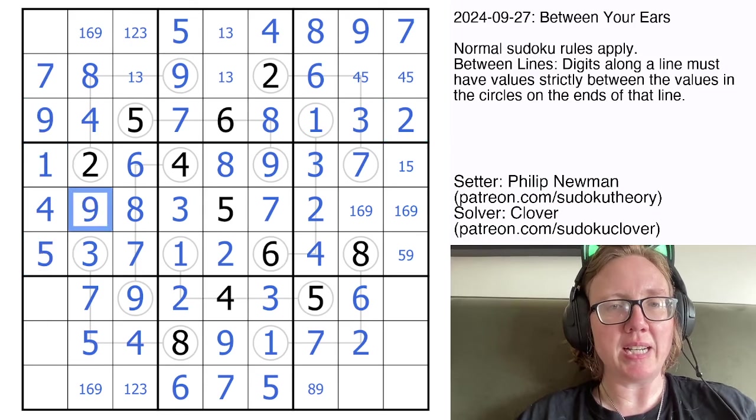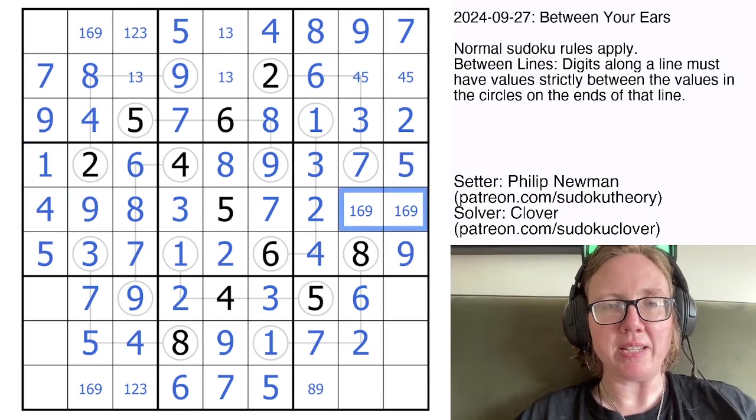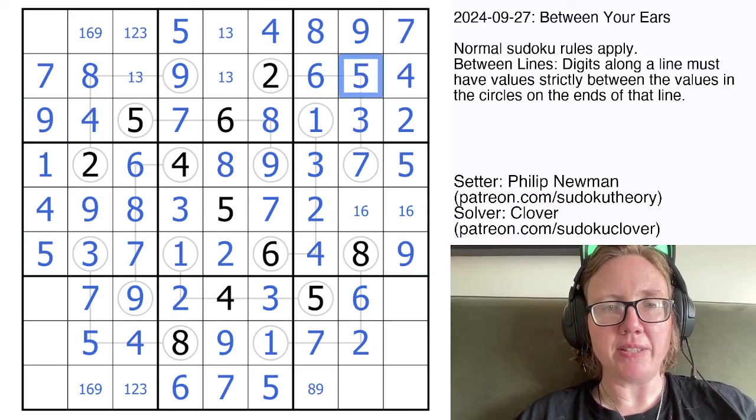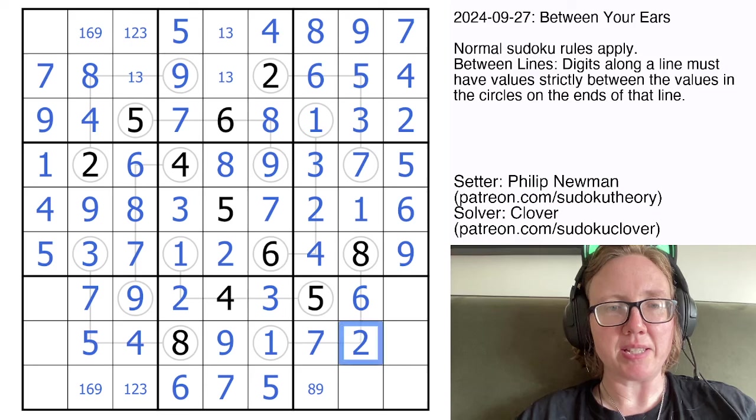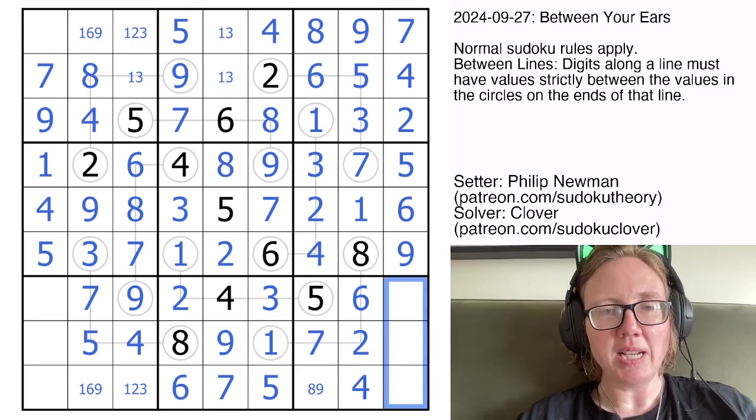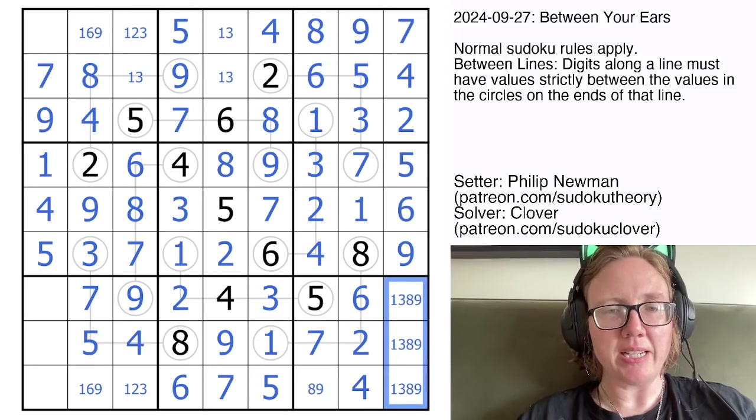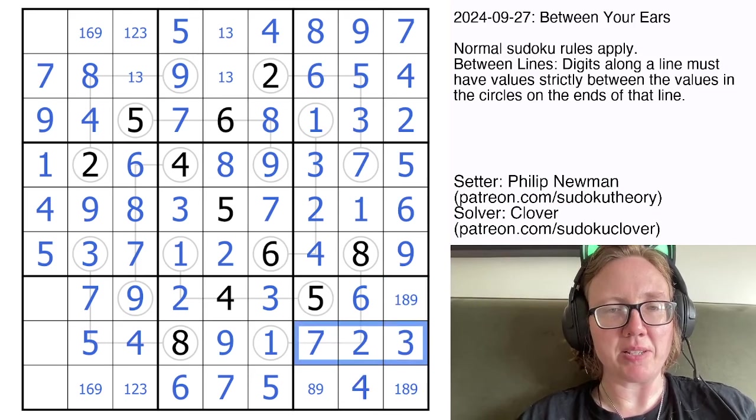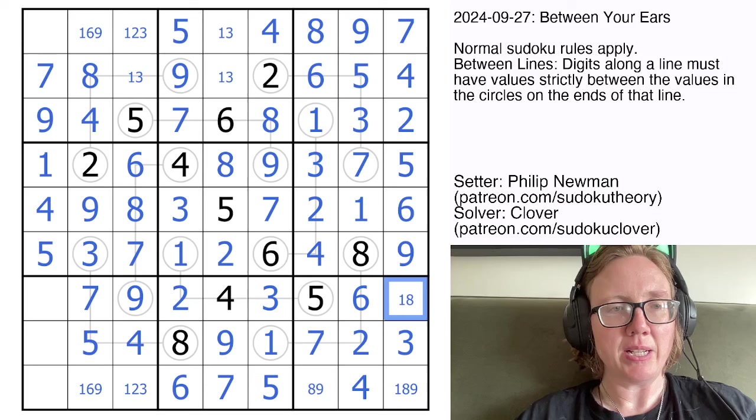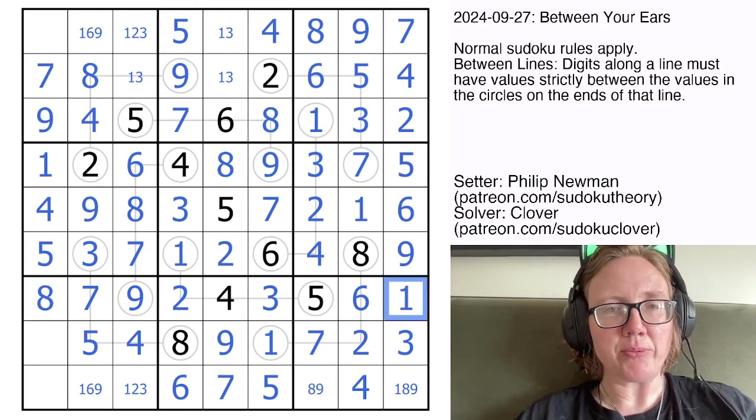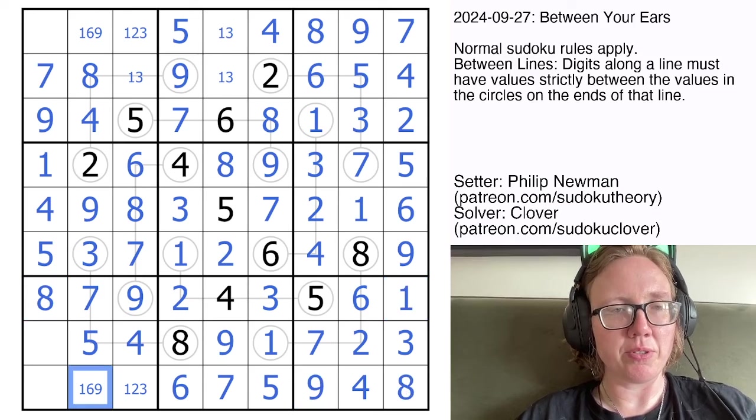That will be a 5 and a 1 and a 9, and I think we can resolve the entirety of this. So that's now a 1 and a 6. That's a 4. These will be 1, 3, 8, and 9. That's going to have to be a 3 by Sudoku because of what we already have in the row. And I think that we can do the rest of it just via classic Sudoku rules.